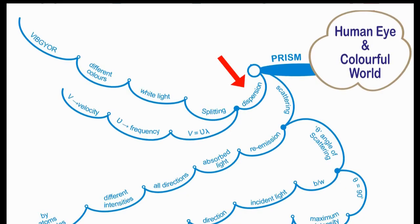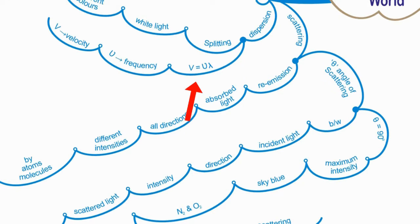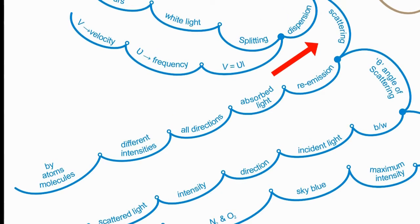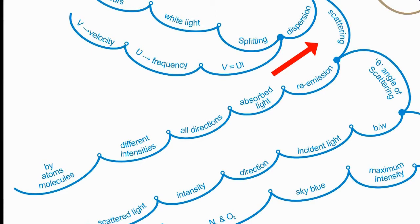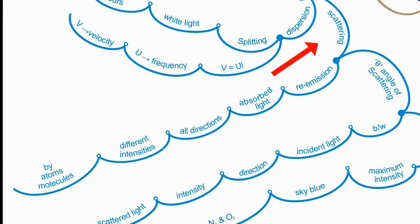Dispersion is splitting of white light into different colors. If GR is called dispersion, which is given by velocity equals frequency into lambda, where lambda is the wavelength. Scattering is the process of reemission of absorbed light in all directions with different intensities by atoms or molecules.